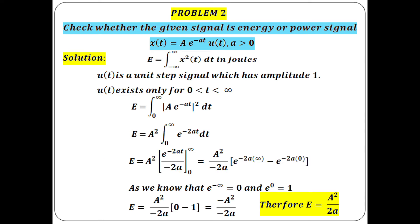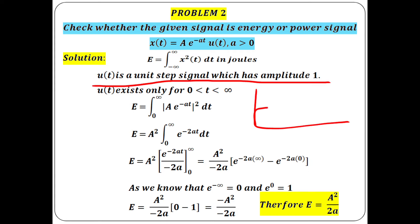Problem 2: x(t) = A·e^(−at)·u(t) where a > 0. Write the energy formula for a CT signal. Since u(t) is a unit step signal with amplitude 1 existing only for 0 to infinity, change the limit to 0 to infinity. Substitute A·e^(−at) whole square dt, giving A²·e^(−2at) dt, with A² taken outside the integral.